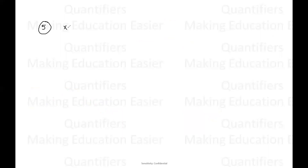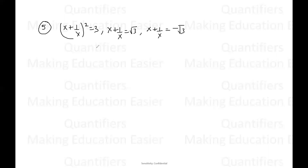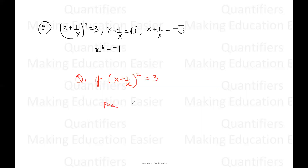Now let us see the question on the last result. I told you: if X plus one by X whole squared equals three, or X plus one by X equals root three, or X plus one by X equals negative root three — in all three cases, X to the power six equals negative one. Now the question is: if X plus one by X whole squared equals three, find X to the power 206 plus X to the power 200 plus X to the power 99 plus X to the power 93 plus X to the power six plus one.